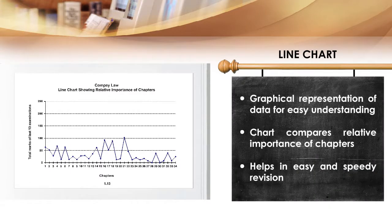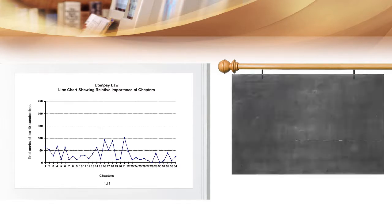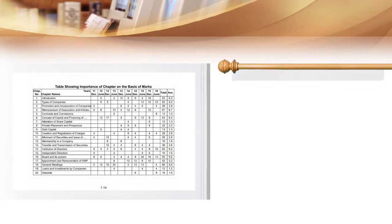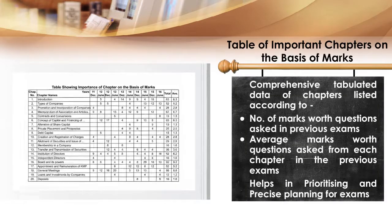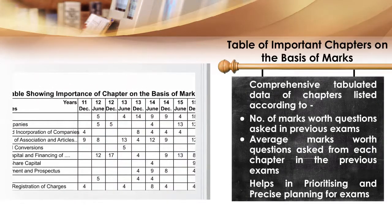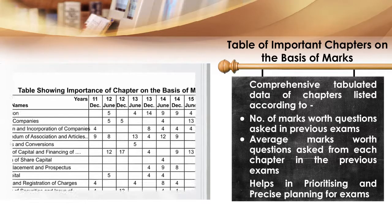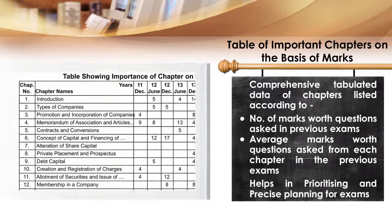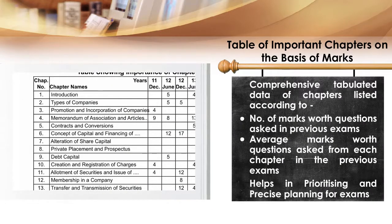The line chart shows the relative importance of chapters of a paper based on the complete coverage of the chapter. It represents the total marks of the questions of a chapter which have been asked in the previous ten examinations.